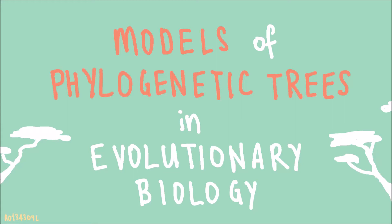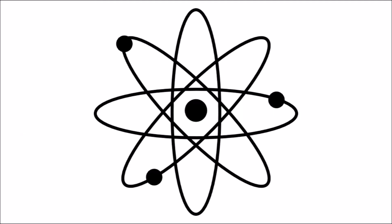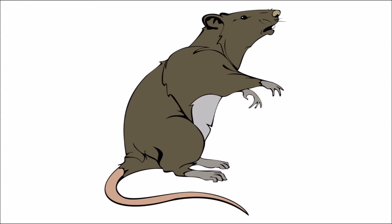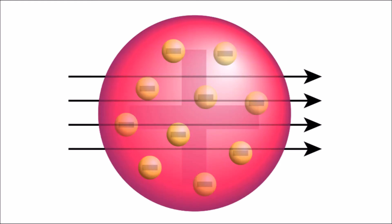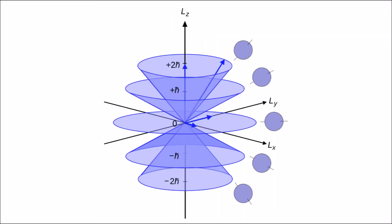Although scientific models may not be as beautiful as the ones you see in perfume advertisements, they are incredibly useful. They are also incredibly diverse, from Einstein's famous equation to this representation of an atom to a model organism like a lab rat. In many cases, scientists can agree on a model that is most accurate. For example, the plum pudding model of an atom has given way to Rutherford's model, then Bohr's, then Schrodinger and Heisenberg's. All this was achieved through experimentation.